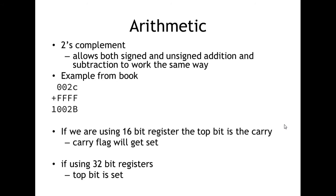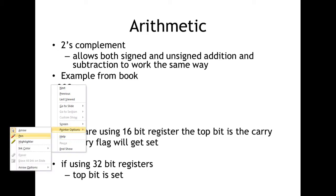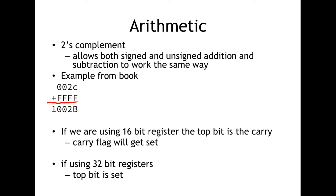Looking at the arithmetic, here's an example from the book where we add two numbers. Each hex digit is four bits, so two hex digits is eight bits — that's one byte. We have a 16-bit value here. Because these are all Fs, in two's complement we know this is a negative value. If we write all the bits, flip them, and add one, we can see that value is negative one.